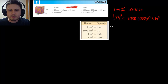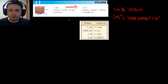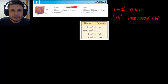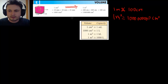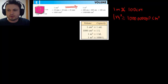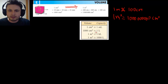Now let's look at units of capacity. Capacity refers to how much stuff you can fit inside a volume. For capacity we use liters, and something not given on the formula sheet that you need to remember is that one liter equals one thousand cubic centimeters. One liter does not equal one cubic meter, because one cubic meter is actually one million cubic centimeters.